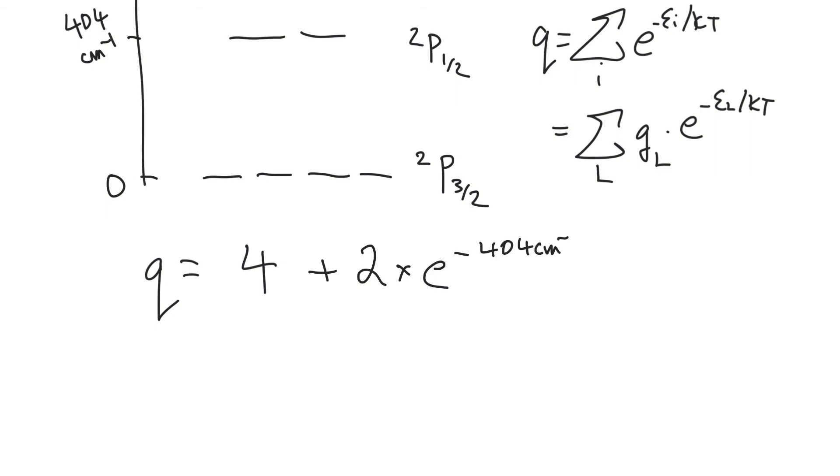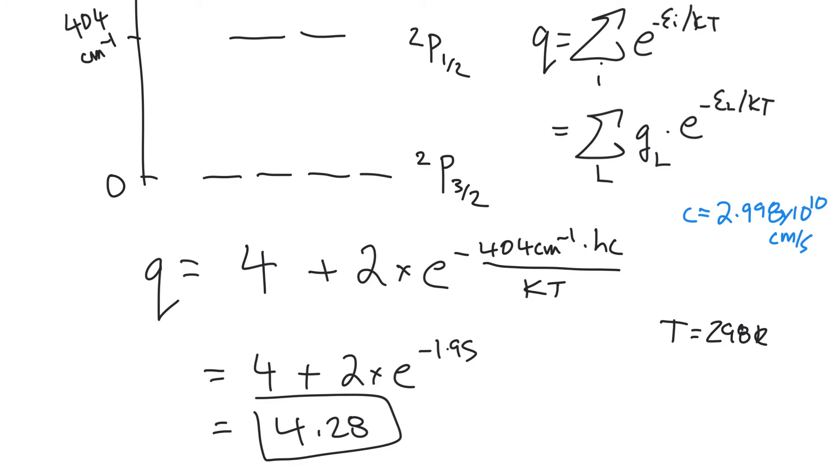And the energy is 404 wave numbers. So we just have to multiply that by HC. And if we're smart, we're going to use C of 2.998 times 10 to the 10 centimeters per second, just to get the units to cancel out right here. And we're dividing it by KT. And that would give us our partition function. And if T is equal to 298 Kelvin, so we're at room temperature, then we can calculate Q. So it's four plus essentially two times by E to the minus 1.95. And that is 4.28. So it looks like that we do have access to some of these higher energy states here. We can store on average about 0.28 of the time up here compared to down here.